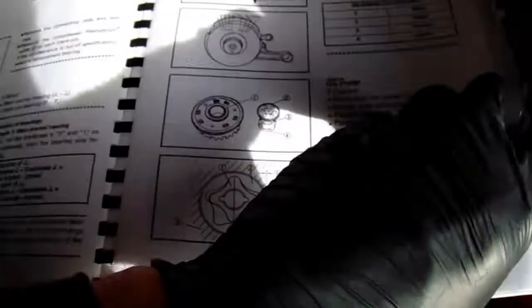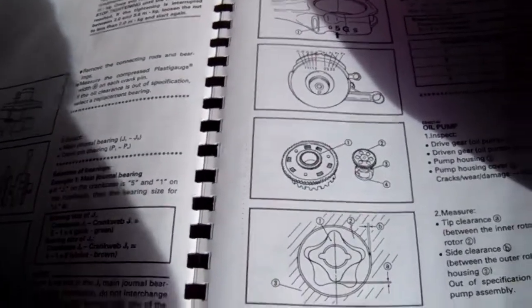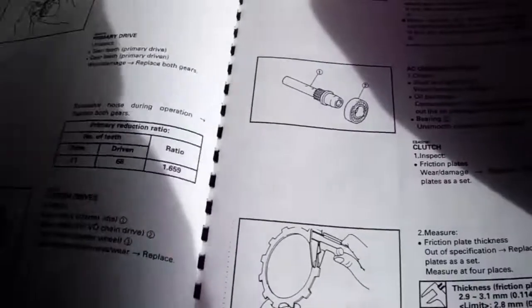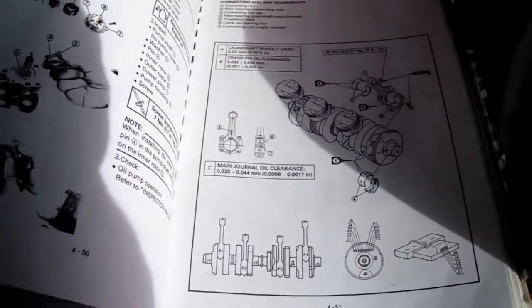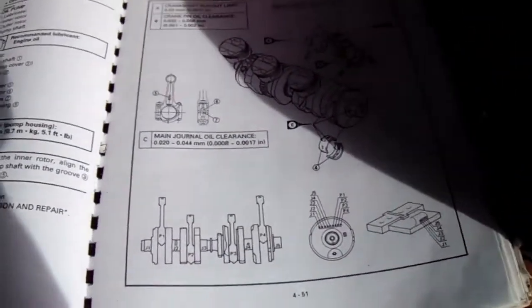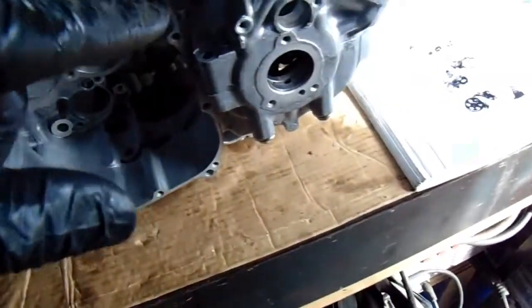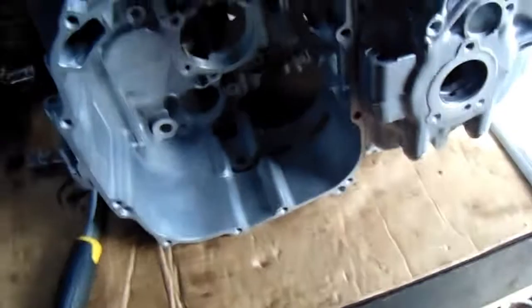So what I'm going to do now is I've ordered some plastigauge. And when that comes, then what I'll do is I'll get the crank in, put a strip on and we'll torque it down and then we'll measure it that way. That'll do for today. As soon as the plastigauge comes, I'll get the crank in, put a strip on and we'll torque it down and then we'll measure it that way. Bye.